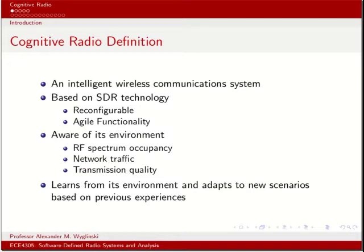Furthermore, cognitive radio is often very much aware of its operating environment in terms of spectrum availability, network traffic, and transmission quality. But this is not also a unique definition for cognitive radio — there are a number of wireless standards that do this exact same thing in an automated fashion for accessing wireless spectrum and transmitting. This last bullet really sets cognitive radio apart from all other types of wireless devices: the ability to learn from its environment and adapt to new scenarios based on previous experiences, something not usually associated with your everyday run-of-the-mill wireless communication system.